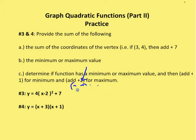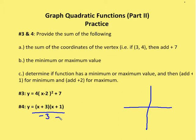Number four might be a little more difficult. I'm going to find the sum of the coordinates of the vertex. This is in intercept form, so conceptually we know the roots are going to be negative three and negative one, meaning at x = −3 or x = −1, y is going to be zero. Using the zero product property, we find where the graph crosses the x-axis. When y = 0, the graph crosses the x-axis. Plugging in −3 gives zero for one term, and plugging in −1 gives zero for the other term. So our roots are negative one and negative three.